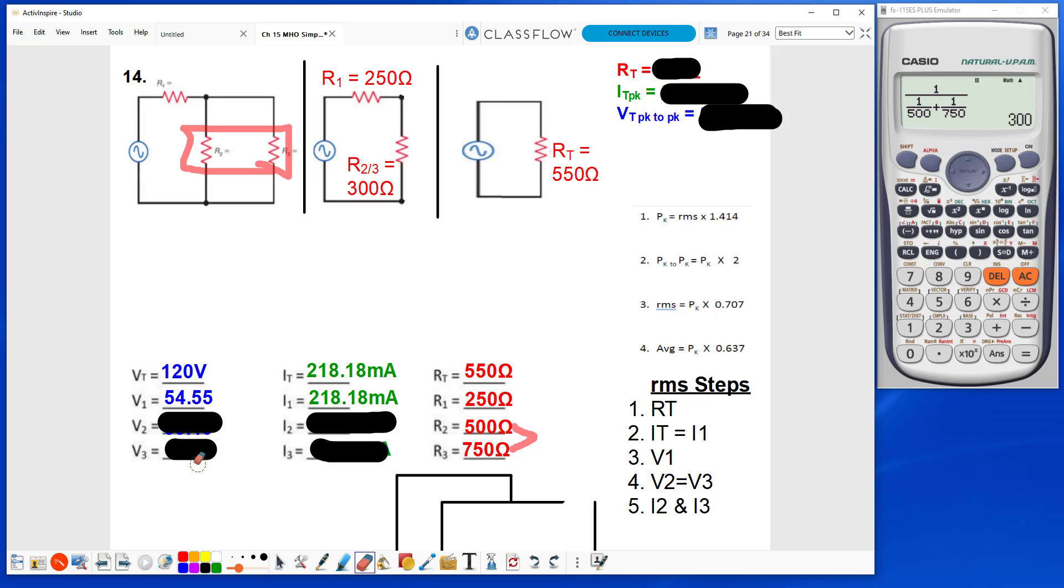V2 and V3 will have the same value, but they cannot both have 120 volts because we've already dropped 54.55 volts at V1, so we subtract the 54.55 volts from the 120, and that gives us 65.45 volts for V2 and V3.